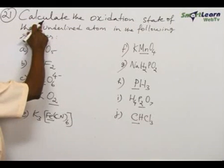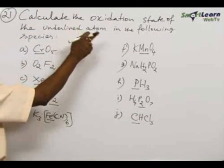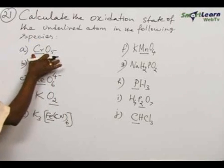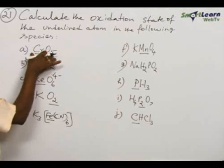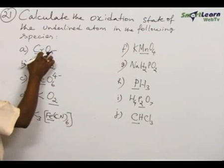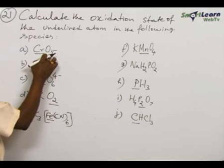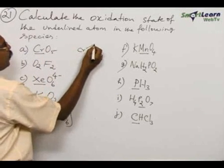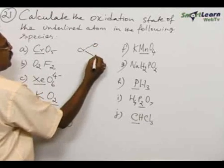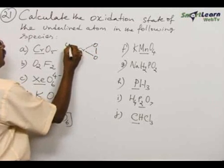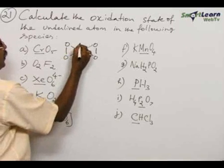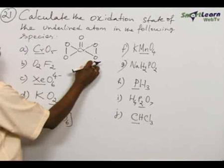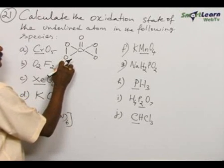Problem number 21: calculate the oxidation state or oxidation number of the underlined atom in the following species. A: CrO₅. In CrO₅, what is called is the peroxide form. Even though there are 5 oxygen atoms, there are some peroxide linkages. The structure is: Cr — this oxygen-oxygen is the peroxide linkage, and here also oxygen-oxygen is a peroxide linkage. For peroxide linkages, the oxygen atom has oxidation state minus 1.